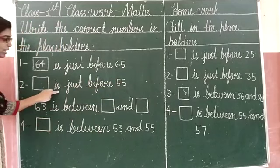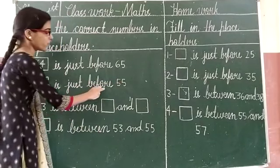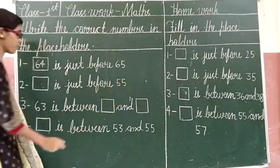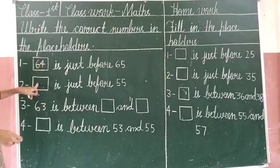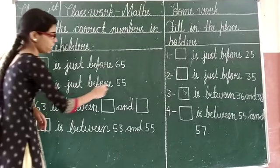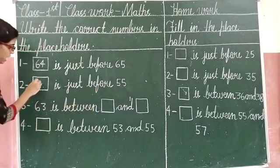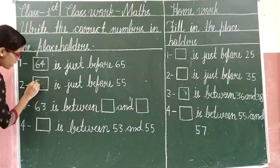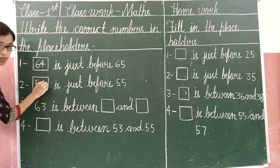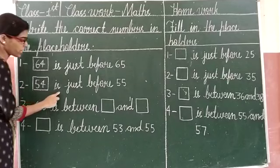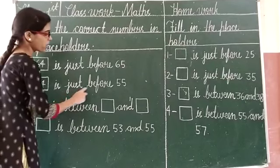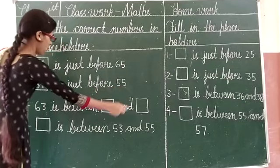Number 2 is just before 55. 55 is the unit. 54. So, 54 is just before 55.